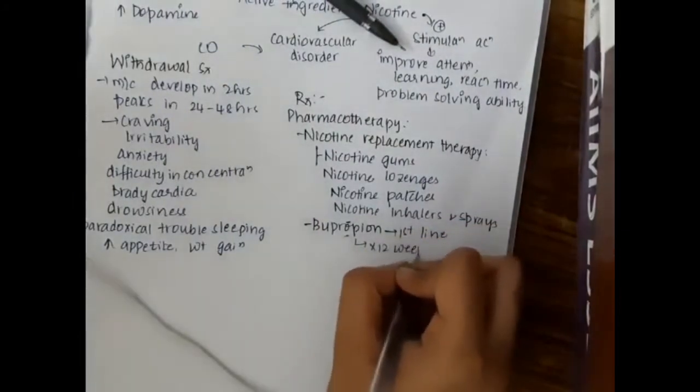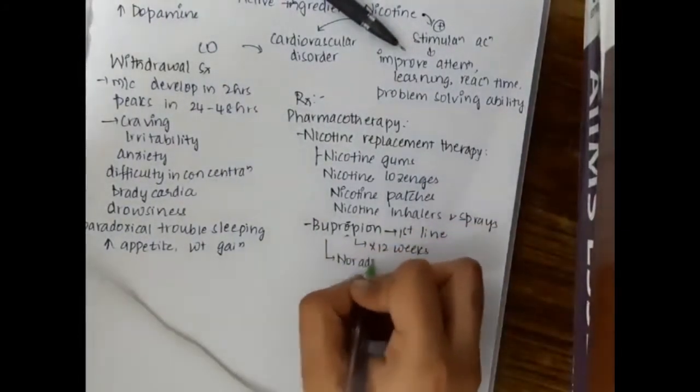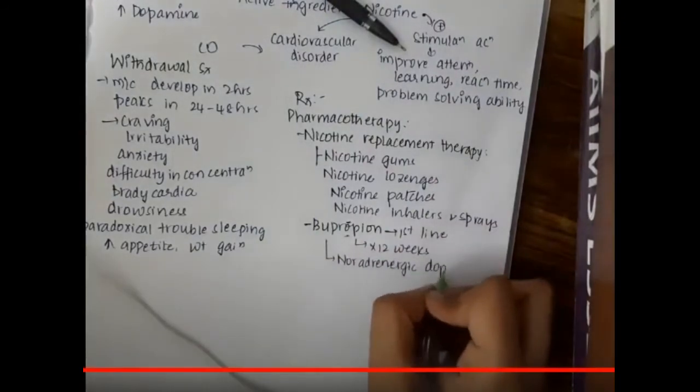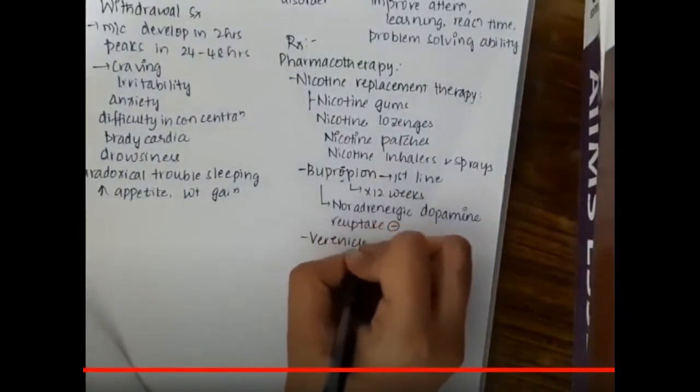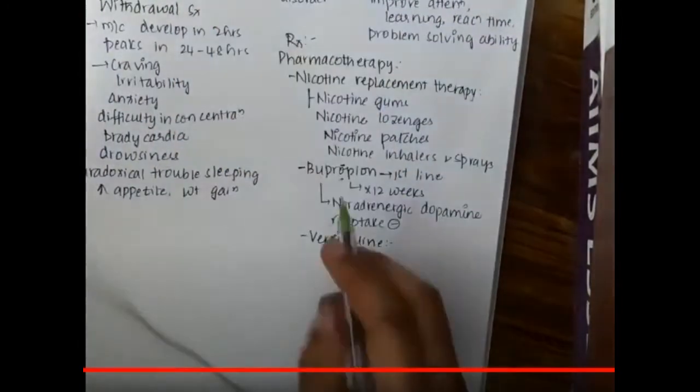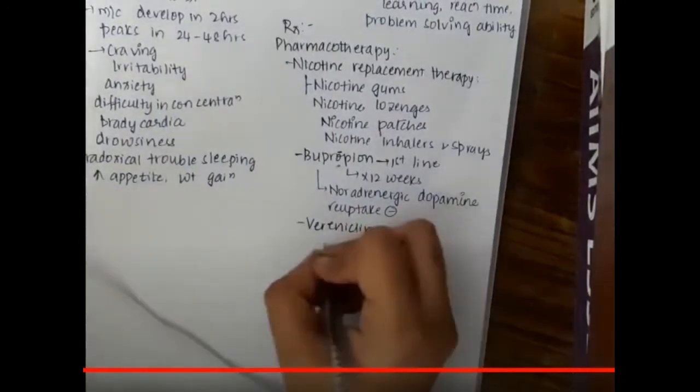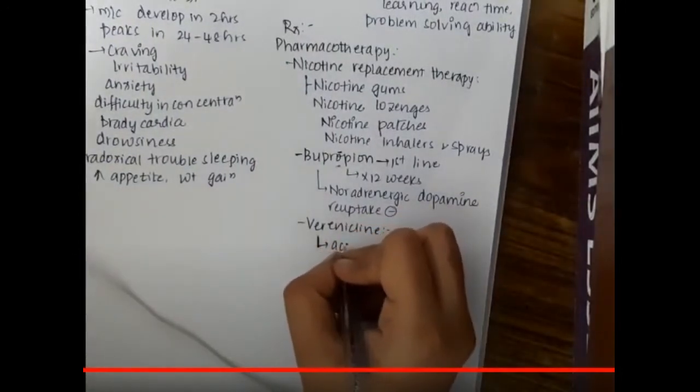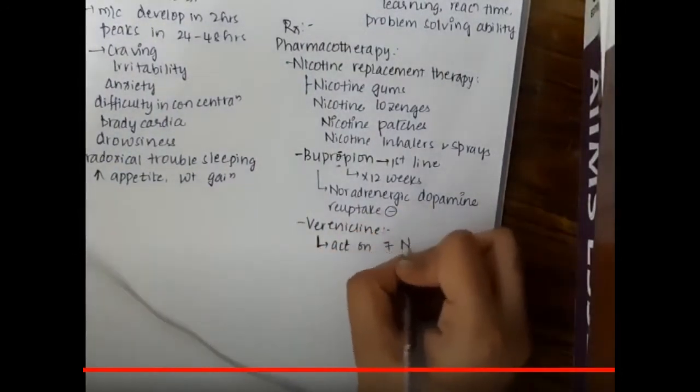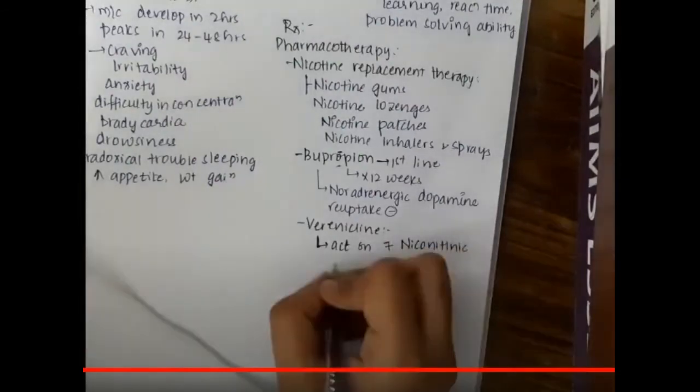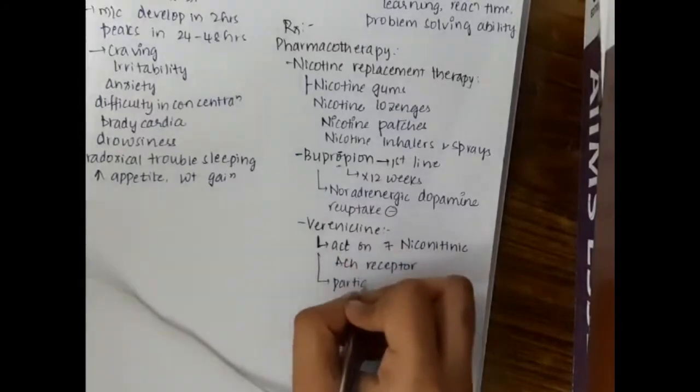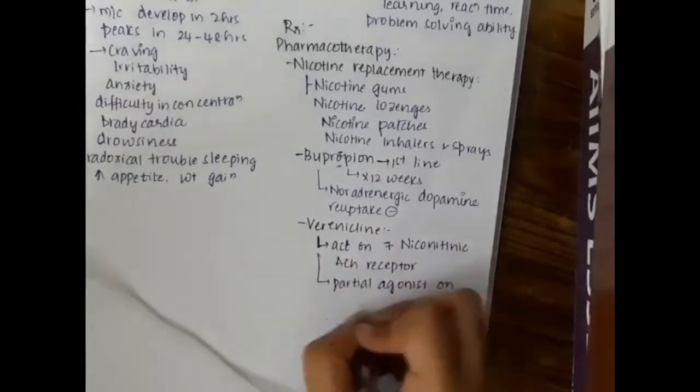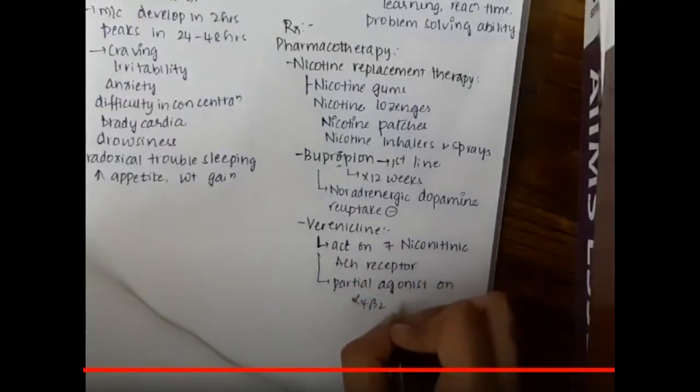Bupropion is the first line agent which can be used for 12 weeks. This is a non-adrenergic dopamine reuptake inhibitor. The next drug is varenicline. Varenicline mainly acts on alpha 7 nicotinic acetylcholine receptors. Varenicline is a partial agonist on alpha 4 beta 2 receptors.